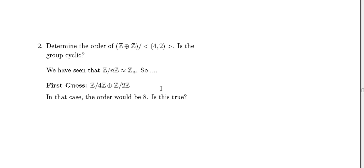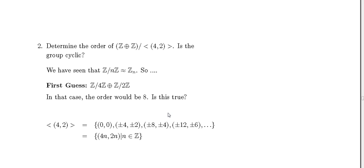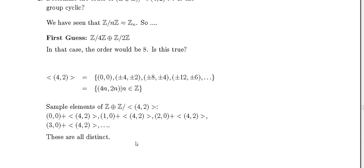In this case, the order will be eight. But is that true? Looking at the set generated by (4,2), we get (4,2), (4+4, 2+2)=(8,4), (12,6), etc. So the set generated consists of elements of the form (4n, 2n) with n in the integers. Some sample elements of the direct sum Z⊕Z modulo ⟨(4,2)⟩ would be (0,0)+⟨(4,2)⟩, (1,0)+⟨(4,2)⟩, etc.